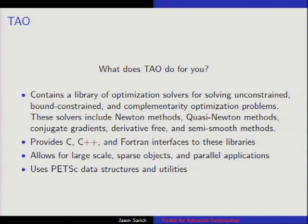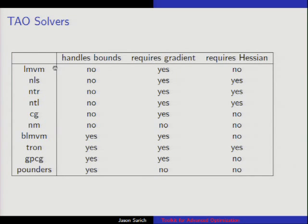So what does TAO do? Like PETSc, TAO is a library of solvers — we have the Newton methods, quasi-Newton methods, everything. You can change your solvers on the command line. We have C, C++, and Fortran support. We can take your same code, solve it on your laptop, and move it to Carver. We use PETSc data structures and utilities — we use PETSc everything, including their make file system.